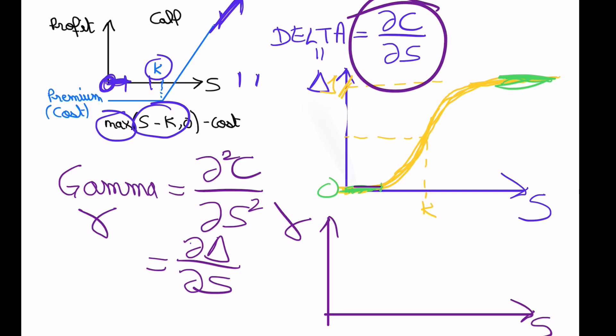So when you're here, the slope is close to zero. Then when you're here, the gamma is the slope of this curve.